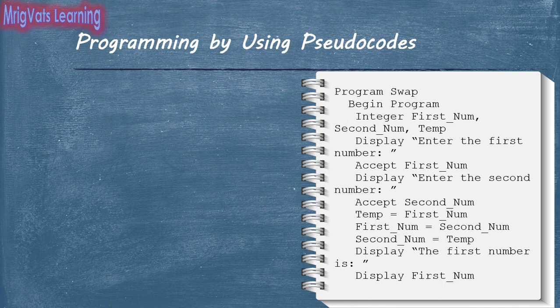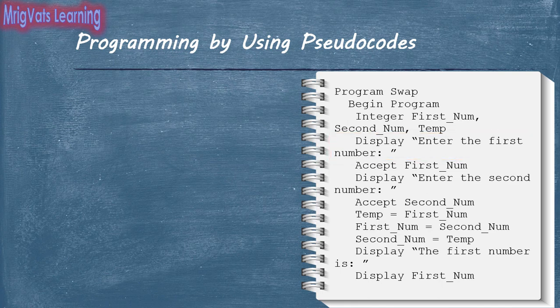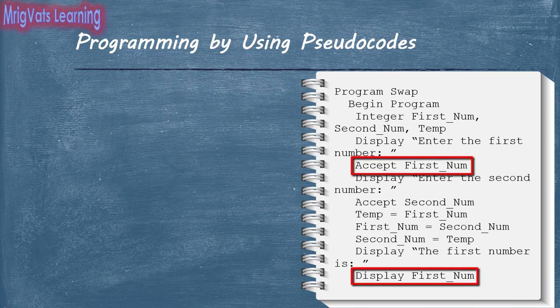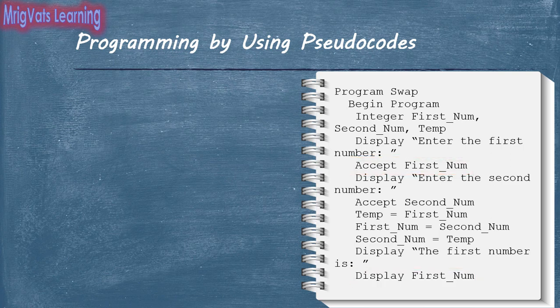In this program, notice that we have used text in quotation marks to display constant values that are used to prompt and display messages to the user. However, to accept and display a variable, you use the variable name without any quotation marks. Remember that variable names are case sensitive and should be used exactly as they are declared.